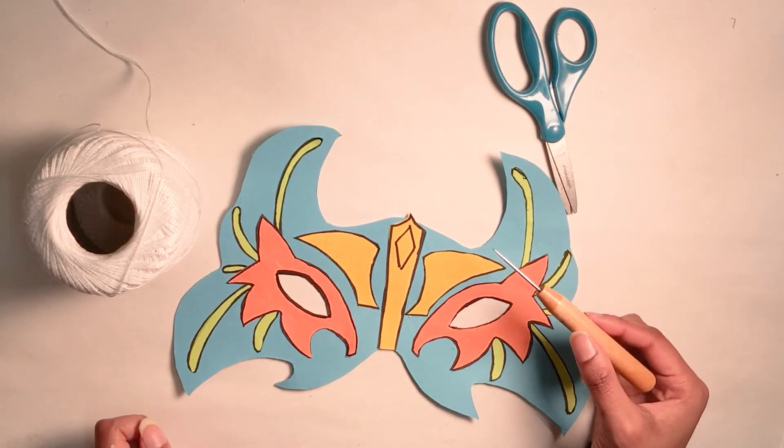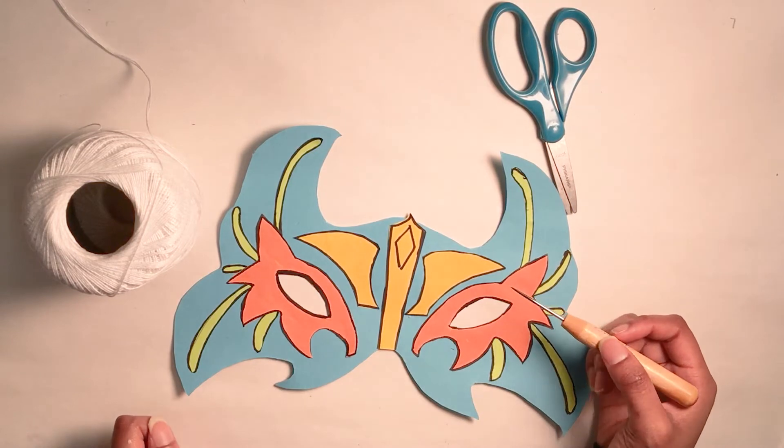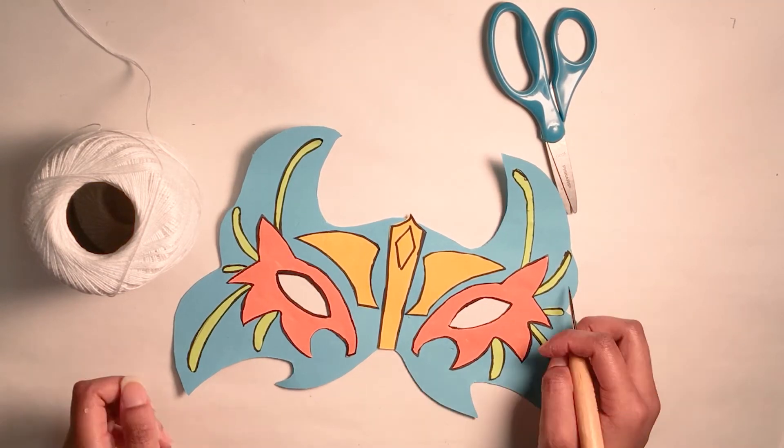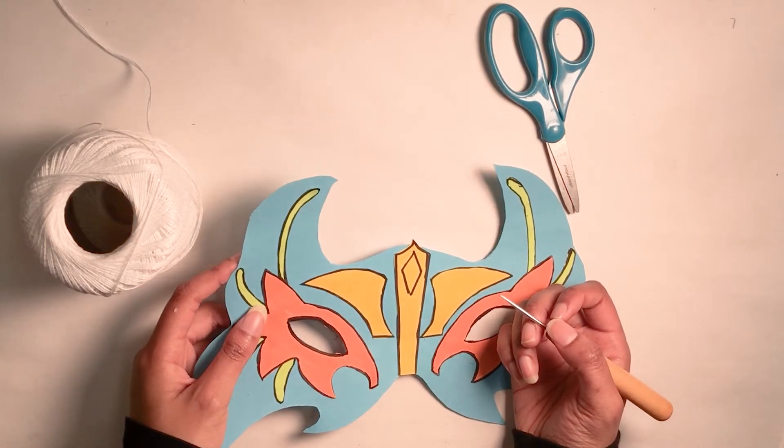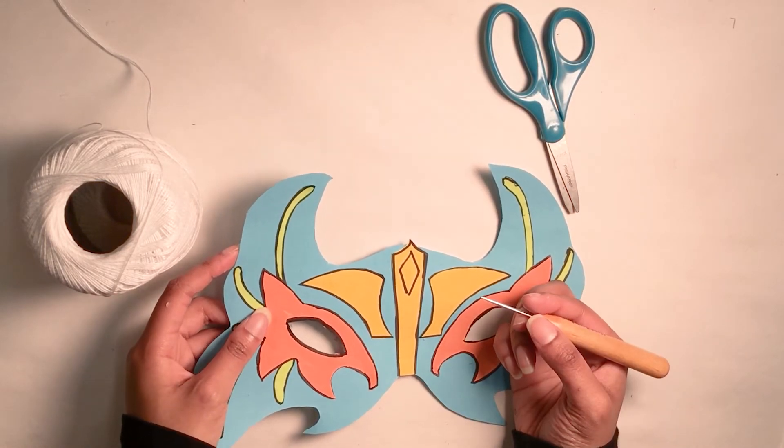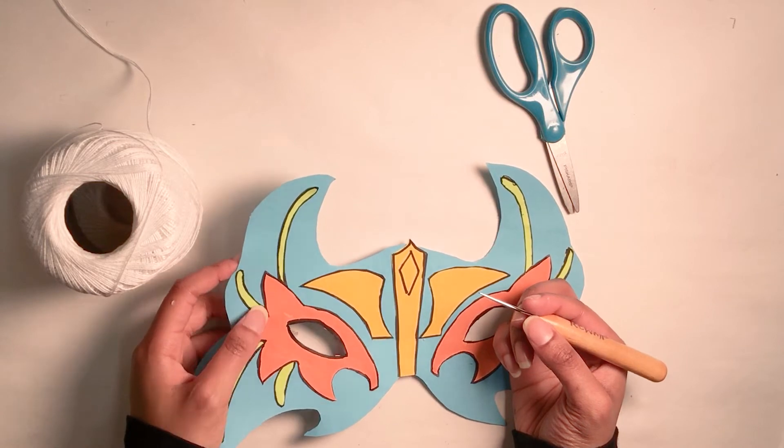So I'm going to use an awl. If you don't have one, you can use a hole puncher or a needle. So when you're poking the hole, you want to make sure that you're careful. And if you're young, you might want some adult help.